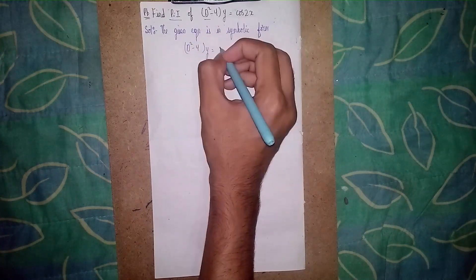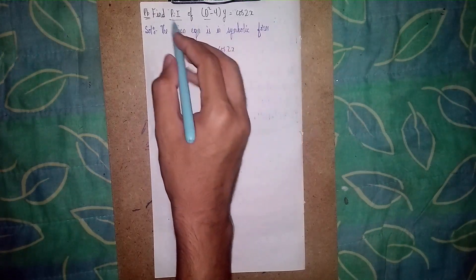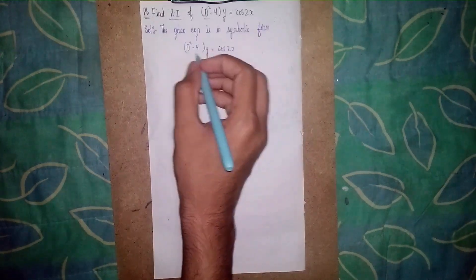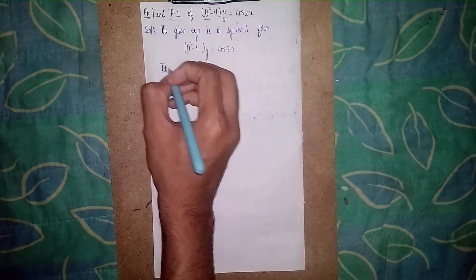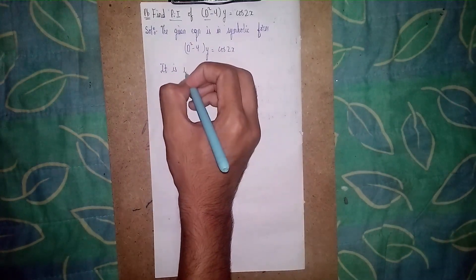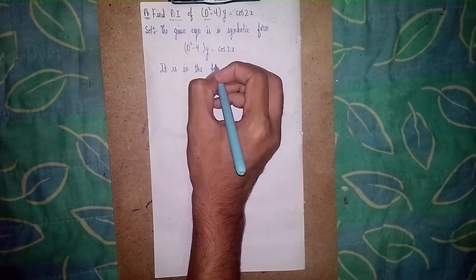Now we have... it's telling the PI, so directly you have to write the straight one here. So write another statement: it is in the form of f(D)y = X. Okay, this is f(D), this is y, and this whole function is X.